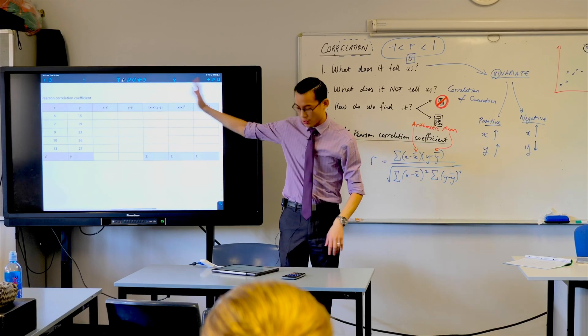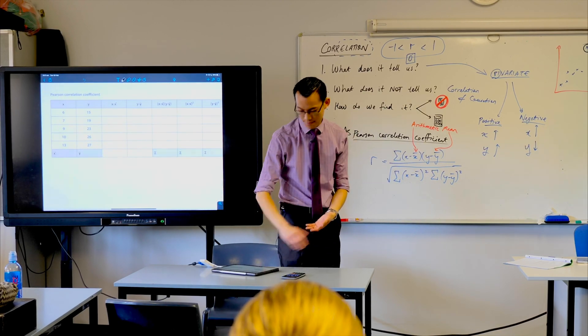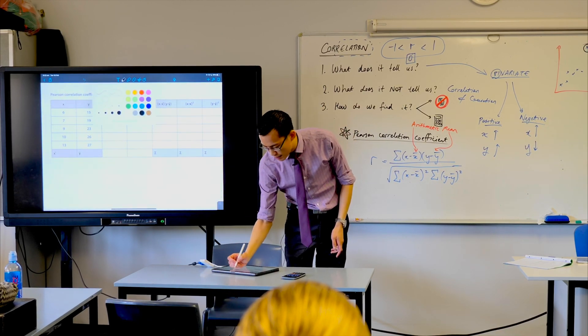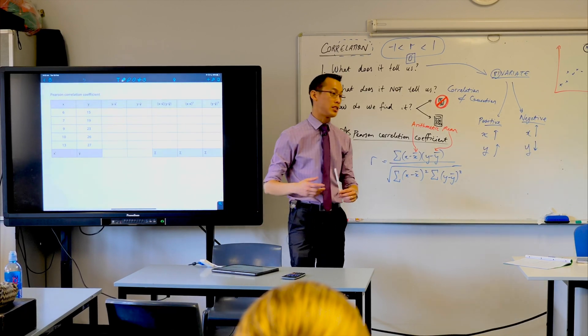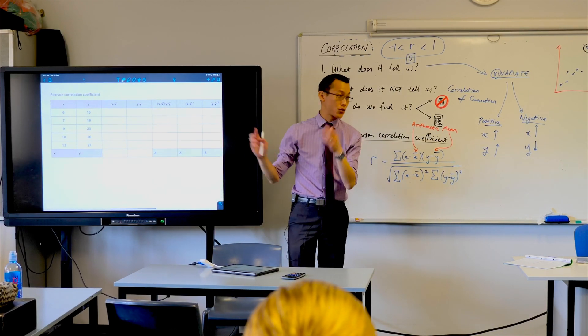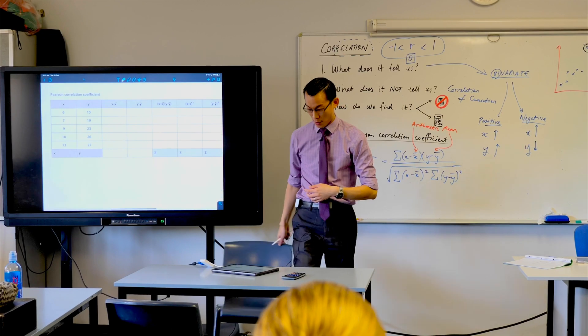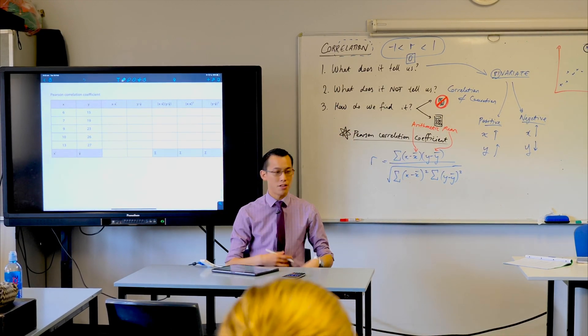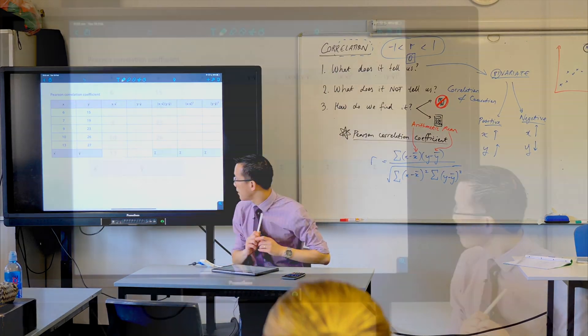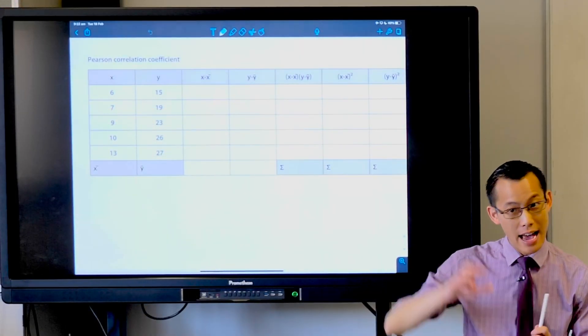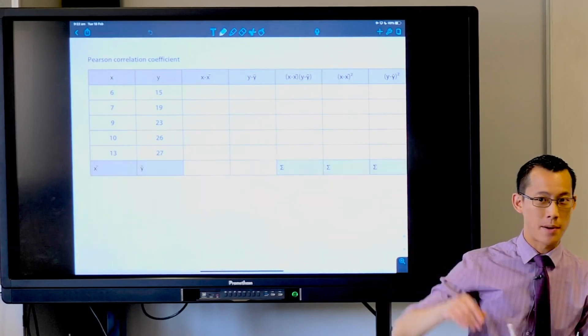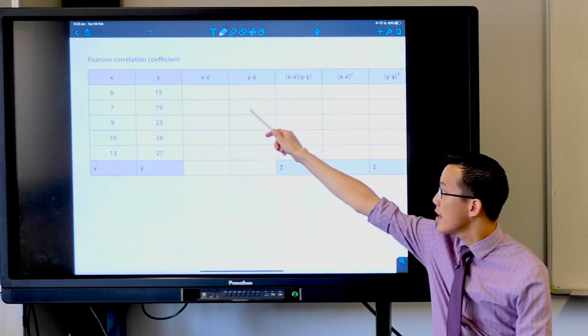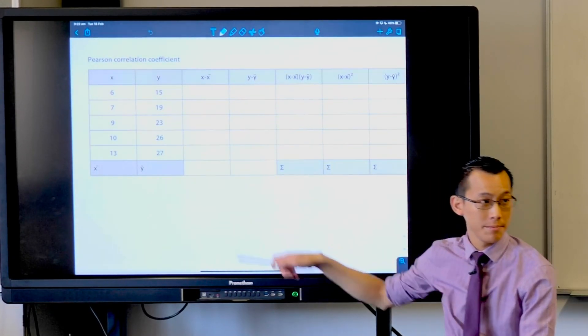Here is a data set. I've deliberately picked a relatively small quantity of numbers and kept them nice and easy—we'll even get whole numbers—so the calculation isn't what you're focused on. You can actually think about what it's doing. To work out our numerator (x take away x-bar, y take away y-bar), I need to know what x-bar and y-bar are—those averages.